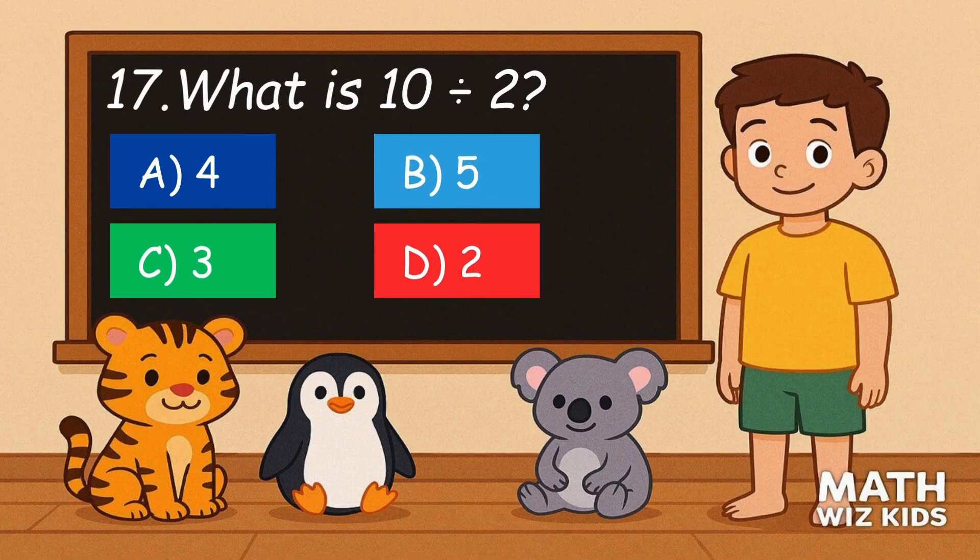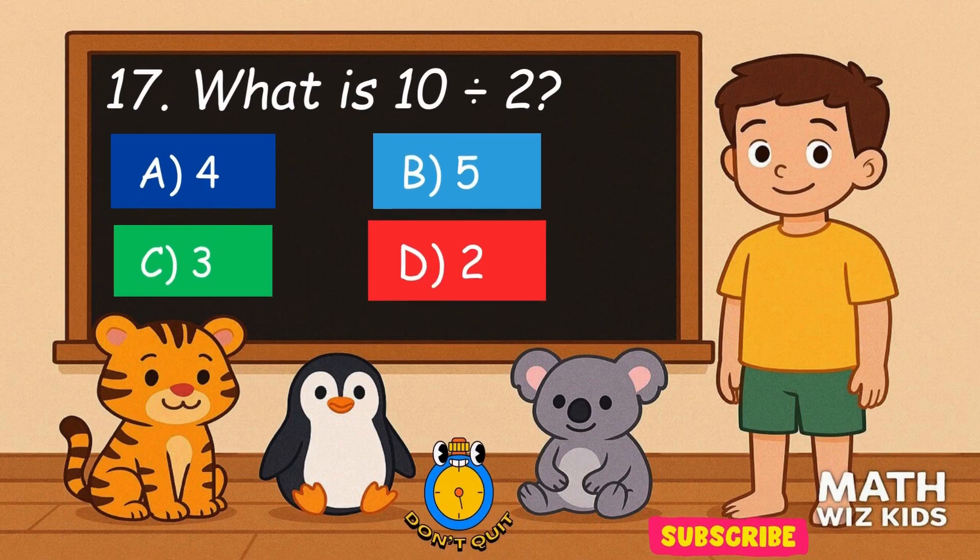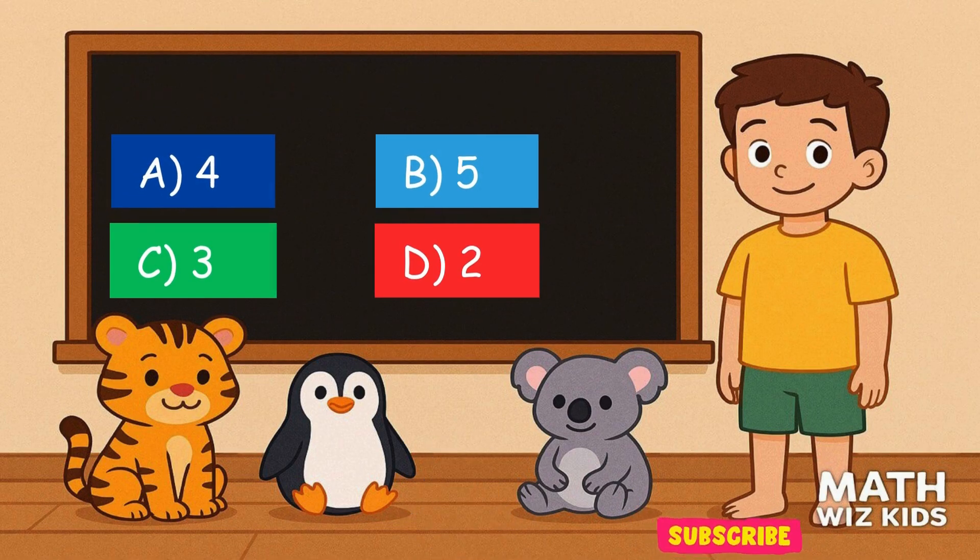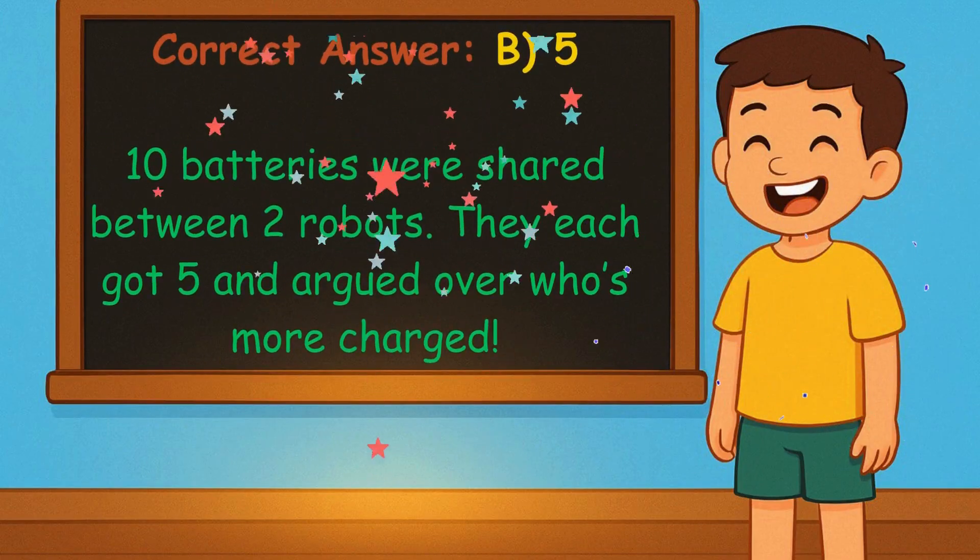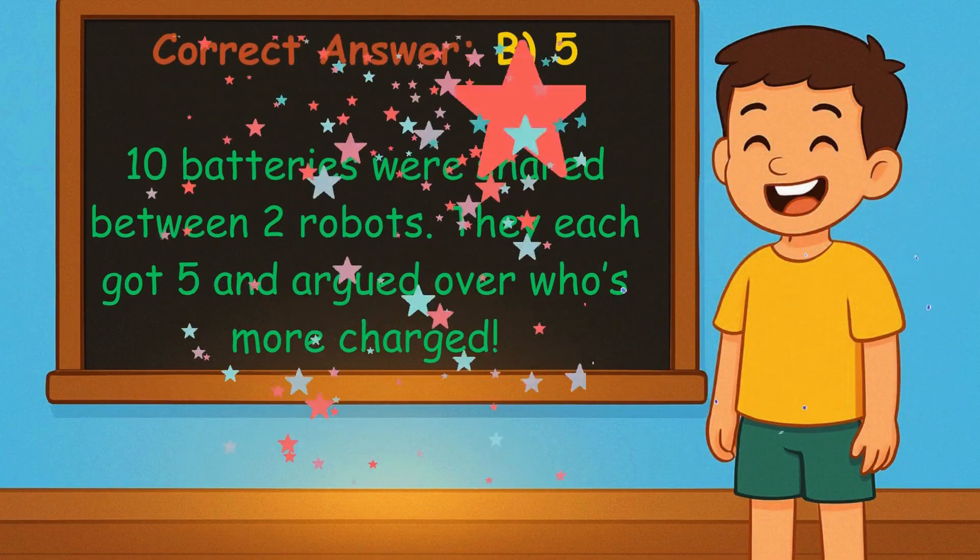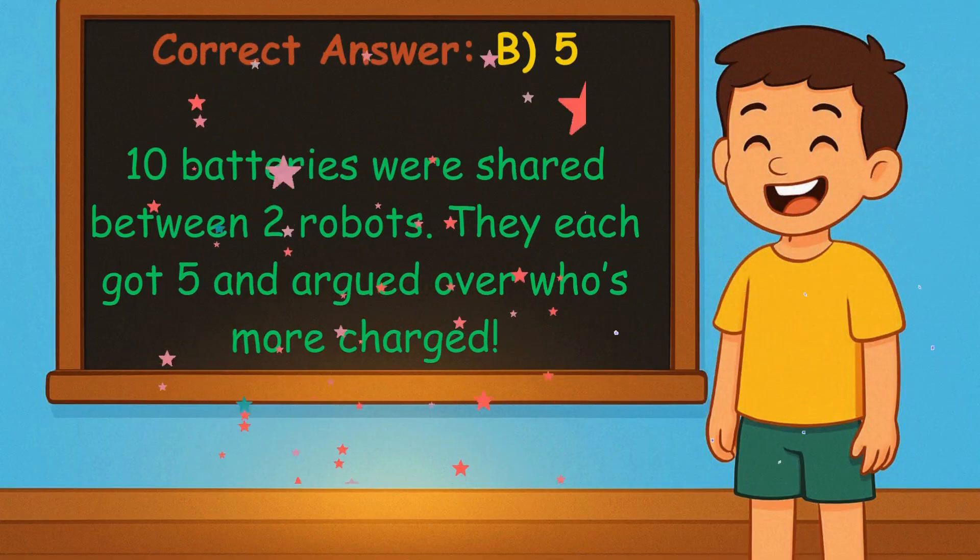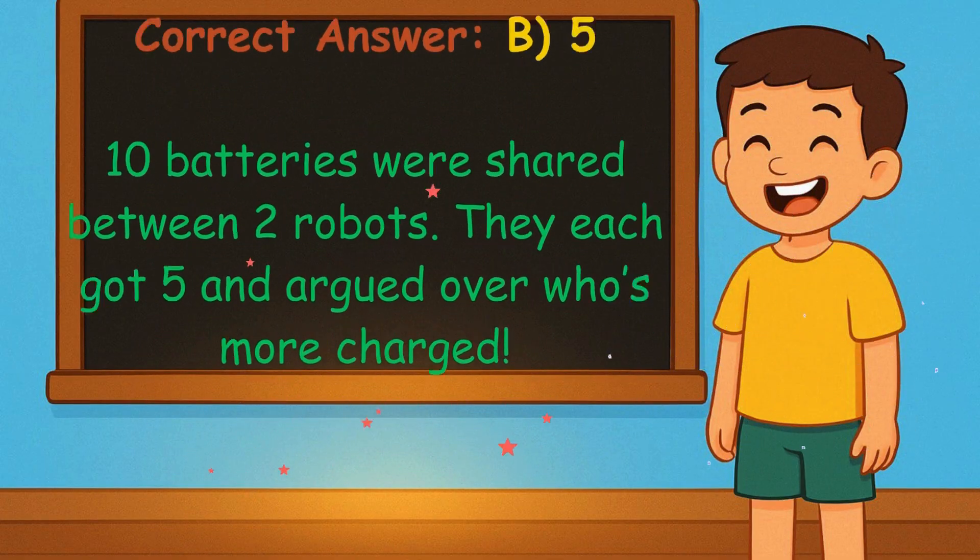17. What is 10 divided by 2? Is it A, 4, B, 5, C, 3, or D, 2? Correct answer is 5. 10 batteries were shared between 2 robots. They each got 5 and argued over who's more charged.